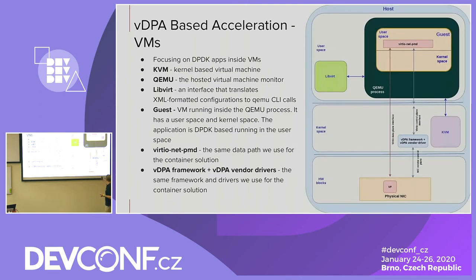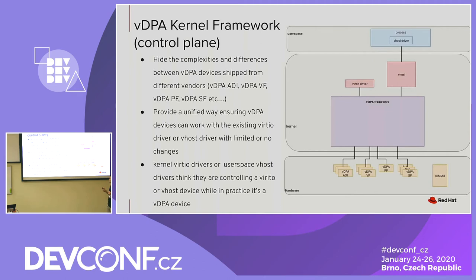Now I'll talk briefly about the VDPA kernel framework, and Maxim will cover the DPDK side. For all the native kernel developers, this is a high-level discussion — Jason Wang, who leads this effort, has written about 30 pages on the details including IOMMU, DMA, and how to support Intel and Mellanox. That's a much broader discussion; we'll take that one at a later time.